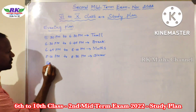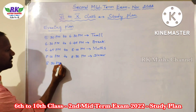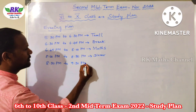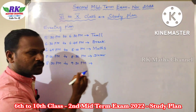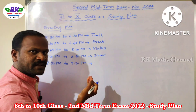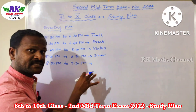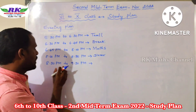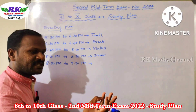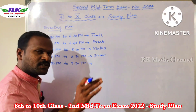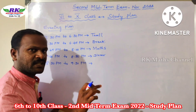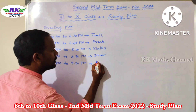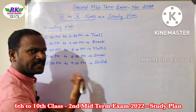8:30 PM to 9:30 PM — next, one hour. What do you do? Maths is a little difficult, but all other subjects are easy. We have English, Social, and Science — three subjects. Social and History require a little more attention. 8:30 to 9:30 — Social subject.